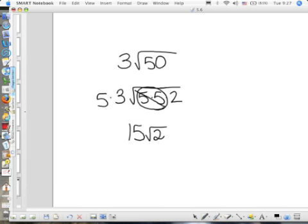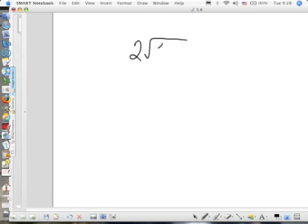Okay, 50 reduces to 5 times 5 times 2, and since it's a square root, I can pull out a 5 and so that's where this 5 comes from because the square root of 25 is 5, but I already had a 3 out here and I multiplied them together to get 15. All right, let's do another one. 2 square roots of 46 plus 3 square roots of 18.